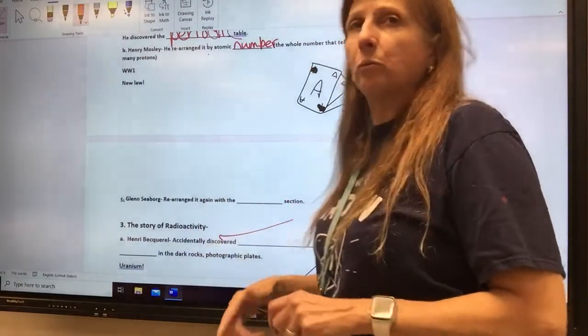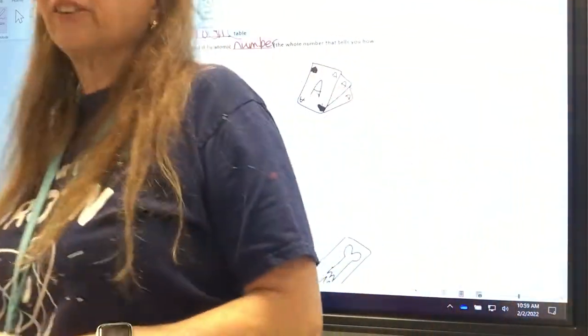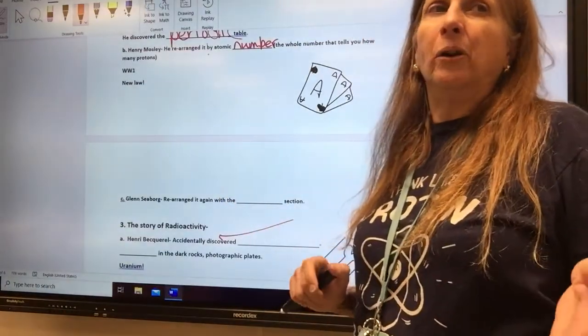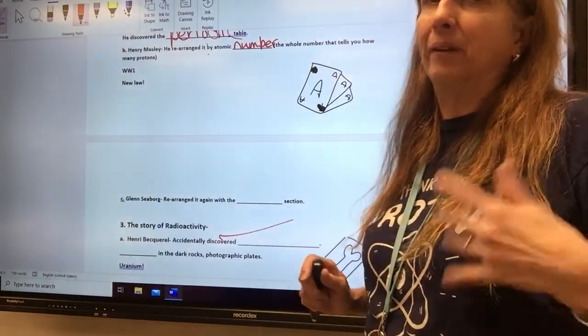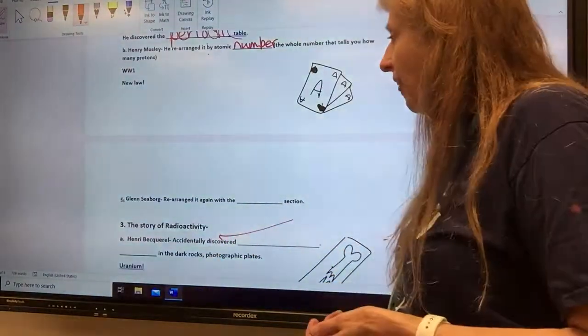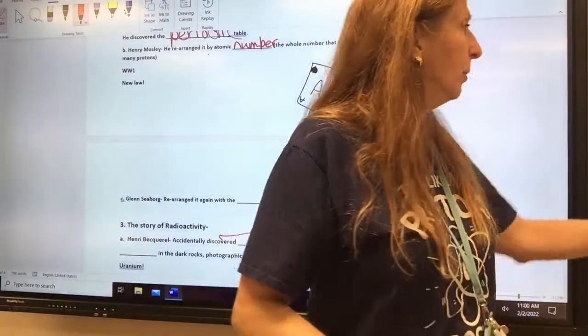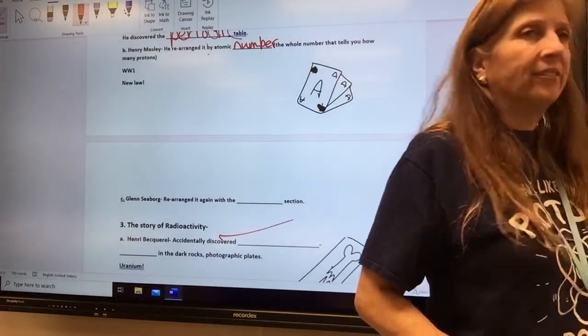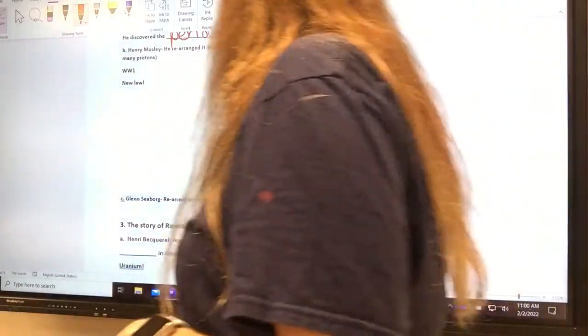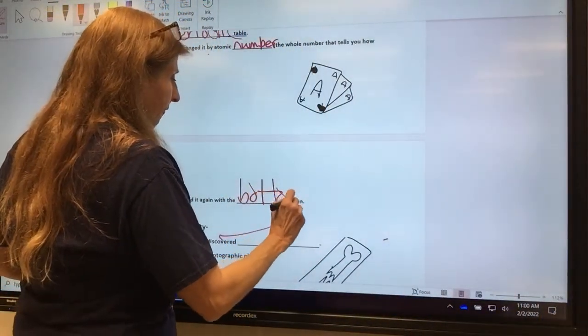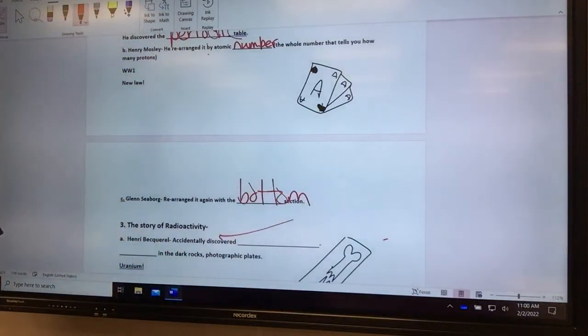The final thing on the periodic table, there's a guy called Glenn Seaborg, and he was alive in the 90s at least, maybe even this century. So he's a more recent addition guy. But he figured out to pull out this bottom part. He pulled out the actinides and the lanthanides, so he arranged it with the bottom section. Those are just a little bit different, and they belong together.